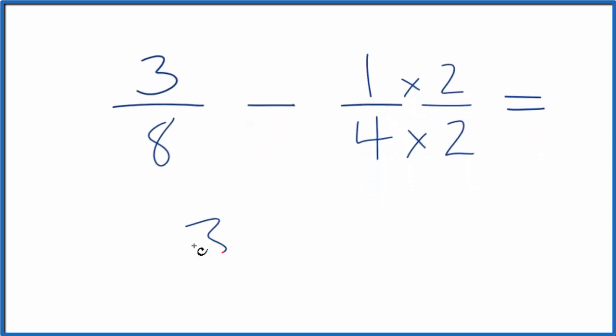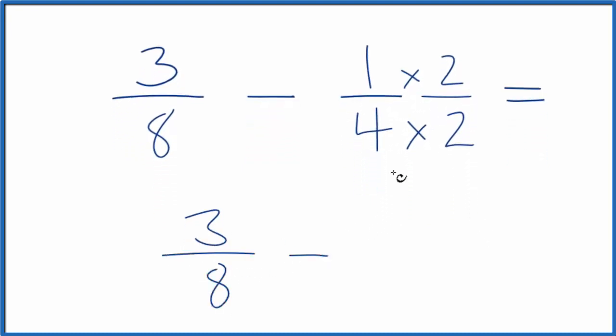So now we have 3 over 8 minus 1 times 2 is 2, 4 times 2 is 8. So now we have that same denominator there.